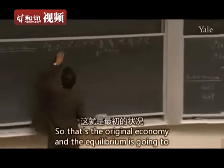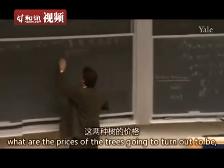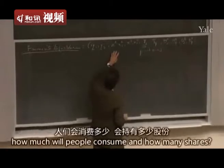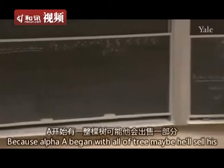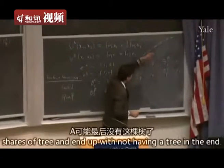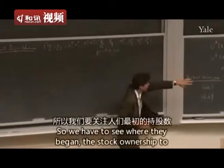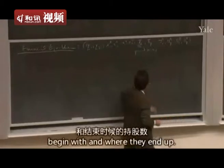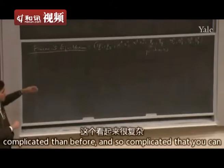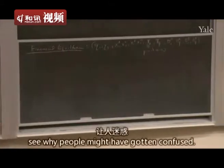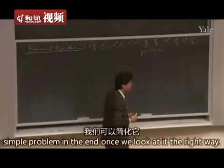The equilibrium is going to show: what are the prices of X1 and X2, what are the prices of the trees, how much will people consume, and how many shares will they hold? A began with all of the alpha tree — maybe he'll sell his shares and end up not holding the tree in the end. It looks way more complicated than before, so complicated you can see why people might have gotten confused. But according to Fisher, it's going to turn out to be a very simple problem once we look at it the right way.